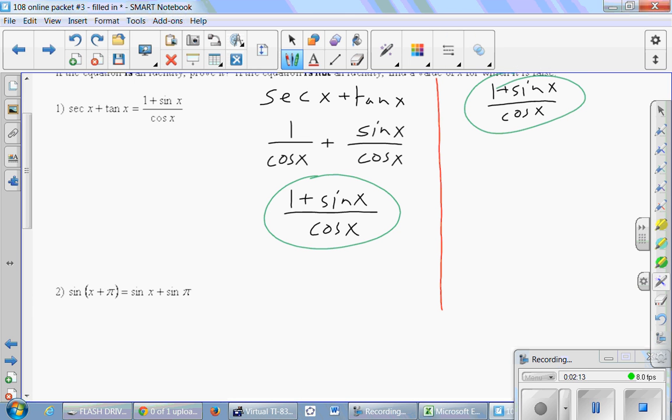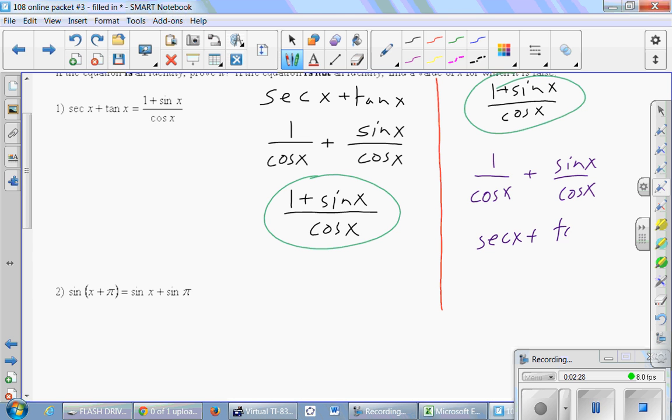An alternative to that would have been to take this thing and split it up. Split this up into two fractions: 1 over cosine plus sine over cosine. And then recognize that these are two other trig functions. 1 over cosine is secant. Sine over cosine is tangent. It's the same process that we just worked through. But just so you think of that as an alternative.